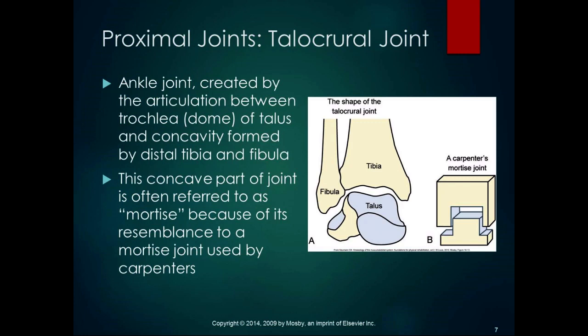The talocrural joint is the most proximal joint in the ankle-foot complex, also called the ankle joint. It's created by the articulation between the trochlea or dome of the talus and the concavity formed between the distal tibia and fibula. The major weight-bearing part is between the tibia and the talus; the fibula helps make it more concave. This concave shape is called a mortise, resembling a mortise-and-tenon joint used by carpenters, making the joint more stable.